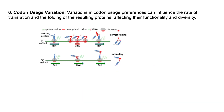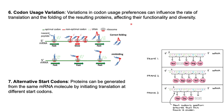Codon usage variation is another factor. Different organisms and even different tissues within the same organism may exhibit variations in codon usage preferences. These variations can influence the rate of translation and the folding of the resulting proteins, affecting their functionality and diversity. Additionally, proteins can be generated from the same mRNA by initiating translation at different start codons, leading to proteins with varying N-terminal sequences and functions.